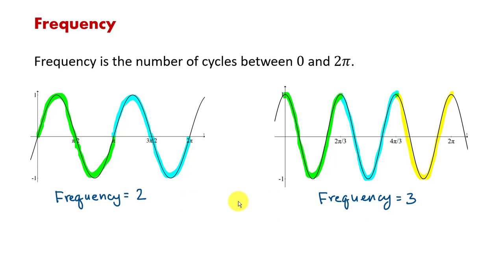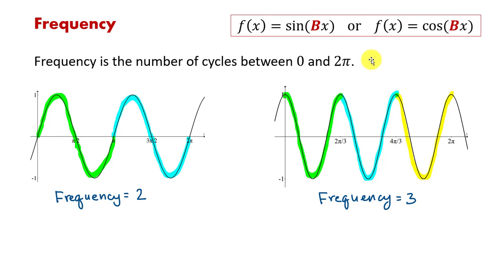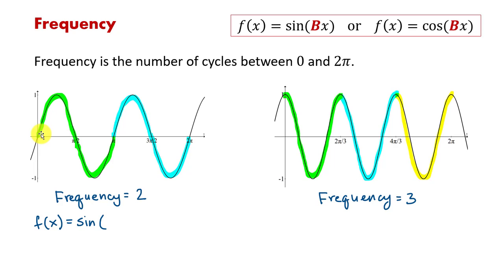How come graphs have different frequencies? Think about the graph as a spring — you can compress it or stretch it, which will increase or decrease the frequency. Frequency, denoted by b, is the number standing in front of x in the function. The first graph crosses the vertical axis at the origin, so it's sine with amplitude one: f(x) = sine of 2x. The second graph crosses the vertical axis not at the origin, so it's cosine with amplitude one: f(x) = cosine of 3x.